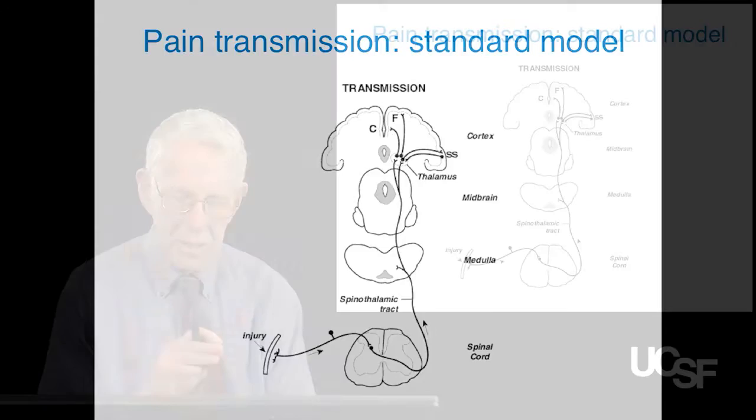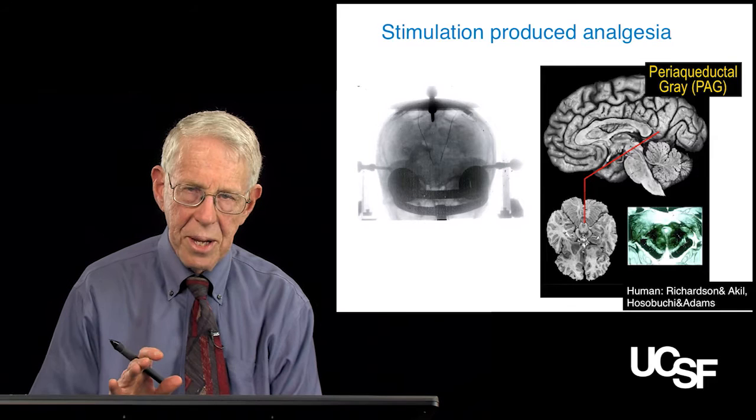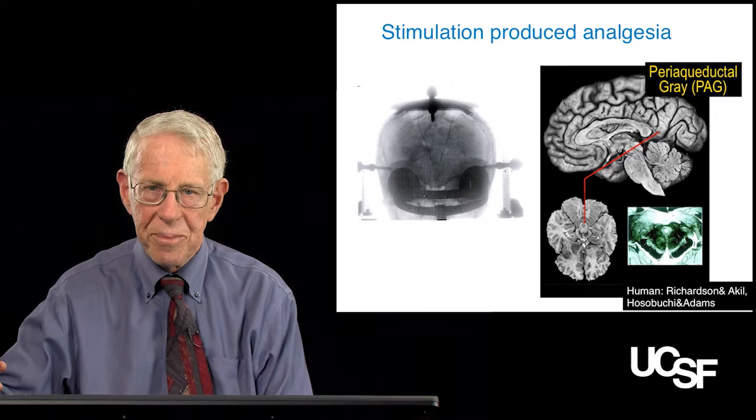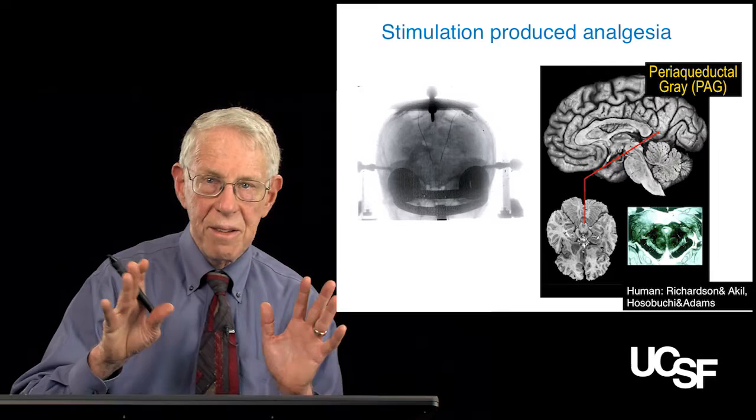Now, in addition to the pain transmission pathway, we now know that there's a pathway running in the opposite direction: the pain modulatory pathway. It actually controls the volume of the pain message that arrives in the brain. So how does this work?